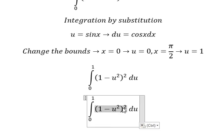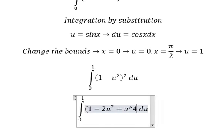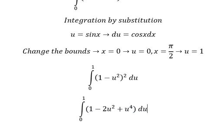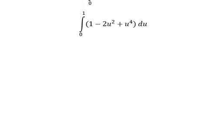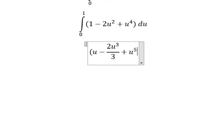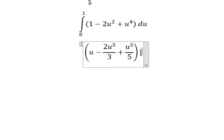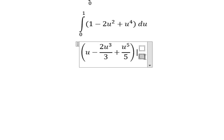Next we need to expand this one. The integration of one gives u, u squared gives u cubed over three, and the last one is u to the power of five over five. We put the bounds from zero to one.